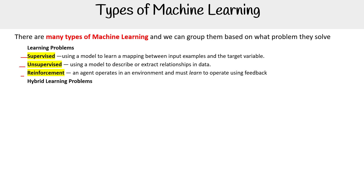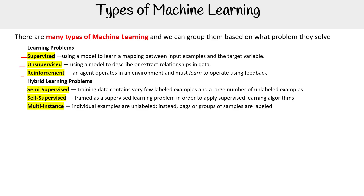Then we have hybrid learning problems: semi-supervised, self-supervised, and multi-instance. Semi-supervised is where you have a mix of labeled and unlabeled data — a lot of unlabeled data and a little bit of labeled data, so it's a mix between supervised and unsupervised. Self-supervised is where the model can label its own data. Multi-instance is where we have examples of unlabeled data that we bag together. We'll cover that in more detail later on.